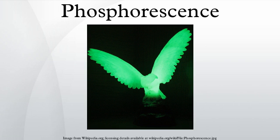In simple terms, phosphorescence is a process in which energy absorbed by a substance is released relatively slowly in the form of light. This is in some cases the mechanism used for glow-in-the-dark materials which are charged by exposure to light. Unlike the relatively swift reactions in a common fluorescent tube, phosphorescent materials absorb the energy and store it for a longer time as the processes required to re-emit the light occur less often.